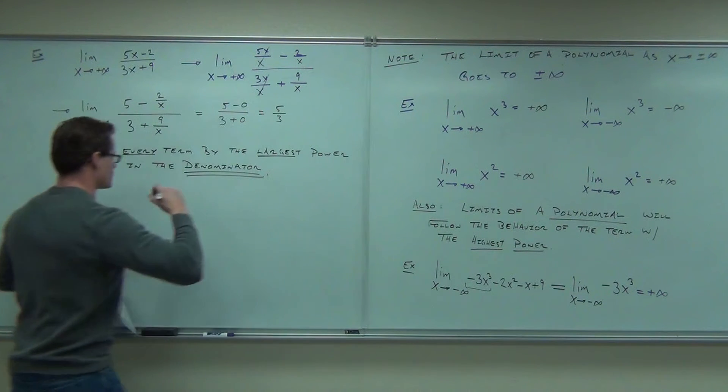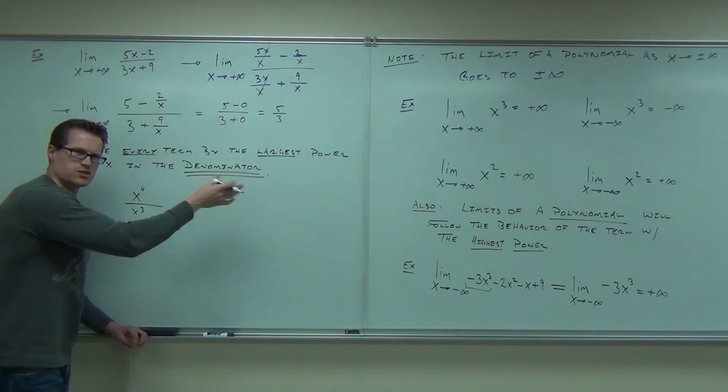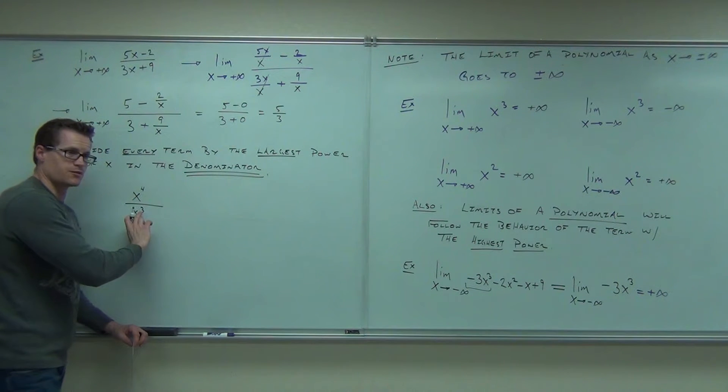For instance, if you had x to the fourth over x cubed and you divided by x to the fourth, you'd have other stuff here, but if you divided by x to the fourth, that's undefined. That's one over x. That's a bad thing.